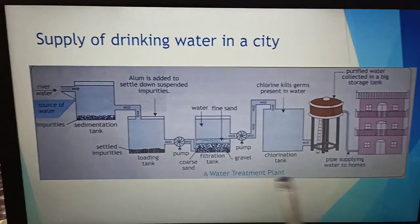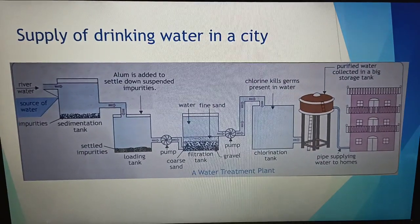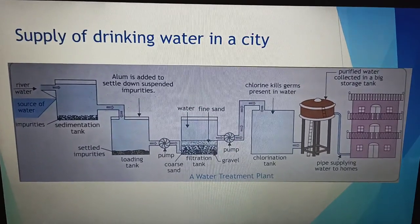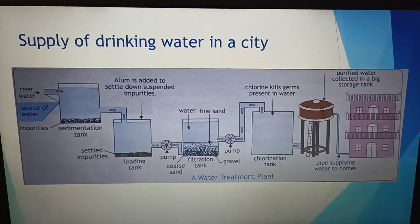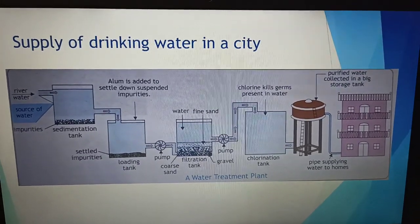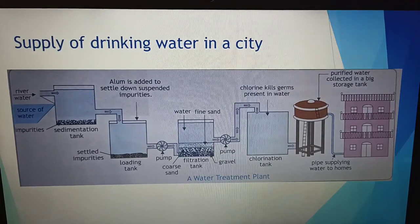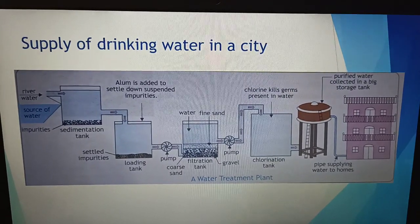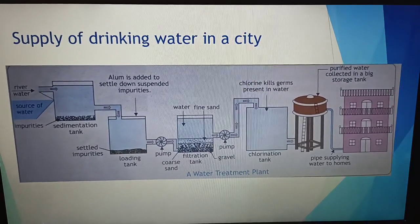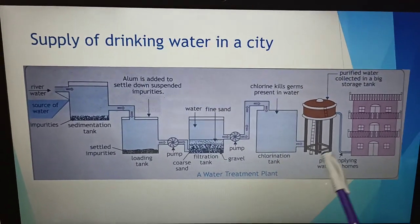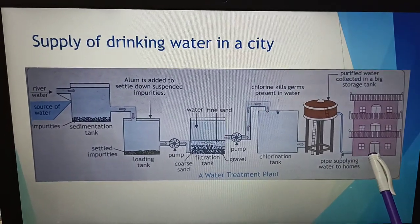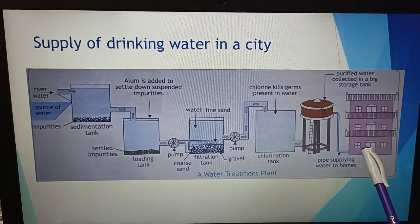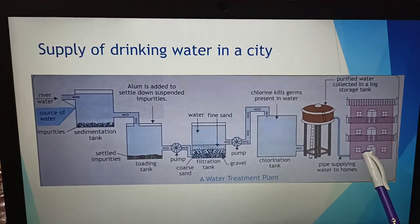Once the filtration technique is done, we move to the next step — chlorination. This is the last stage of purifying drinking water. We add chlorine into the water to kill the germs present inside. Once done, the water can be sent for human use — either as a direct supply to houses or kept in a storage tank for distribution.